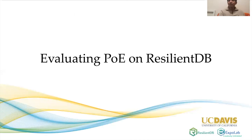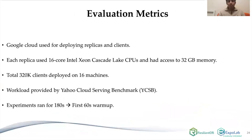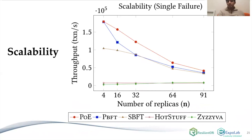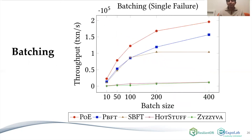For evaluation, we used Guru Cloud with 16-core machines, Yahoo Cloud Serving Benchmark, and ran each experiment for 180 seconds with the first 60 seconds as warm-up. The first graph measures scalability — comparing PoE against PBFT, SBFT, HotStuff, and Ziziva, scaling from 4 to 91 replicas. PoE scales much better than all other protocols, even with failures. We also evaluated batching: PoE still performs better than other protocols and continues gaining performance with larger batches.